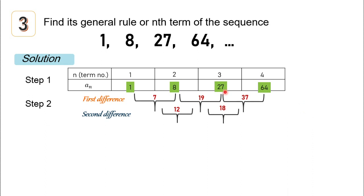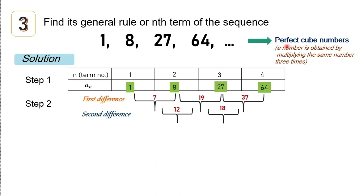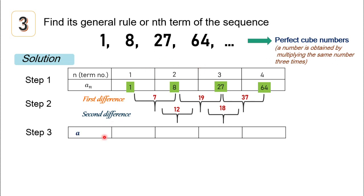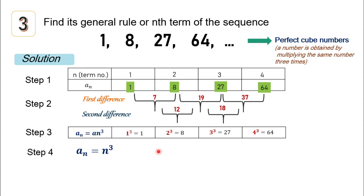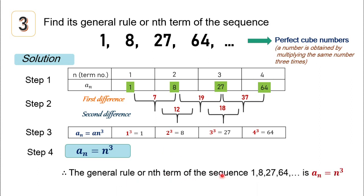Therefore, this is not linear nor quadratic in nature. However, observing the sequence 1, 8, 27, 64 — this is a special type of sequence: perfect cube numbers. They are called perfect cubes because they are obtained by multiplying the same number three times. So the general rule could be a-sub-n equals n cubed. 1 cubed is 1, 2 cubed is 8, 3 cubed is 27, and 4 cubed is 64. Therefore, the general rule or nth term of the sequence is a-sub-n equals n cubed.